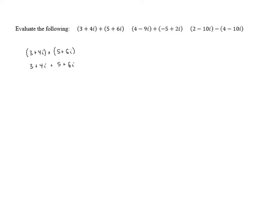It's nice to get the parentheses out of the way because then it's pretty easy to see that we can combine like terms. If we combine the real parts, 3 plus 5 gives us 8. And then if we combine the imaginary parts, 4i plus 6i gives us 10i. So in the end, we end up with 8 plus 10i.